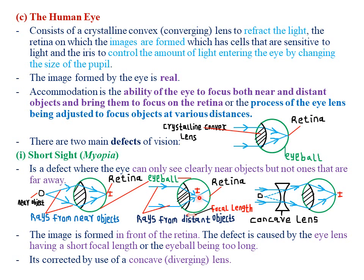The other cause of short-sightedness is the eyeball being too long. If the eyeball is too long, the position of the retina will be far away from the principal focus. The probability of rays being brought to focus in front of the retina will be very high, and once the rays are not meeting at the retina, no clear image will be formed — the image formed is simply blurred, multiple overlapping images. So the causes of short-sightedness are: the lens having a short focal length, or the eyeball being too long.